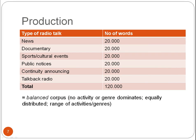Alternatively, if we took a production-based starting point, we would aim to select or sample the same amount of words from each type of radio talk to come up with what is called a balanced corpus. A balanced corpus means that no activity or genre dominates — all are equally distributed — and the corpus includes all the activities, types, and genres that we find in the language variety. From the perspective of many corpus linguists, the more balanced a corpus, the more representative it is. This would favour a production perspective.